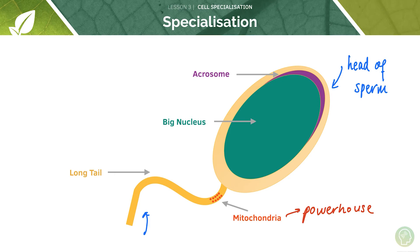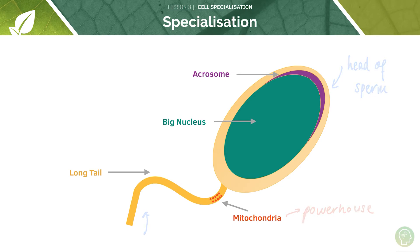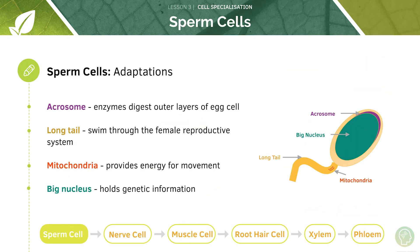Finally, we have this very big nucleus. It's important that the sperm cell has such a big nucleus because it's holding the genetic information. So to recap: we have our acrosome which contains enzymes for digestion of the outer layers of the egg cell; the tail for motility; mitochondria to provide energy for motility; and the nucleus that contains the genetic material of the cell.